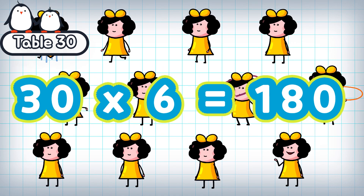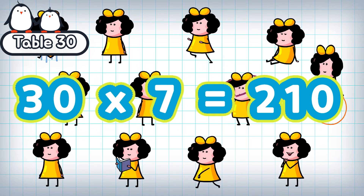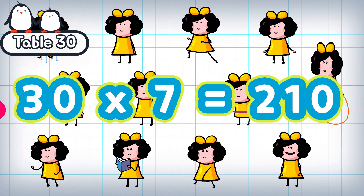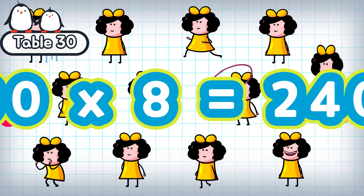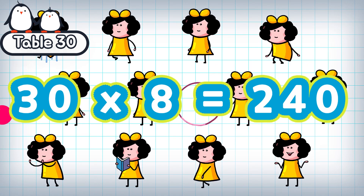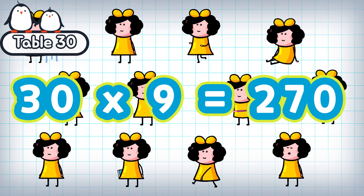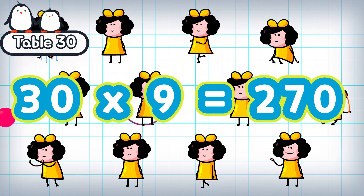30 times 6 is 180. 30 times 7 is 210. 30 times 8 is 240. 30 times 9 is 270.